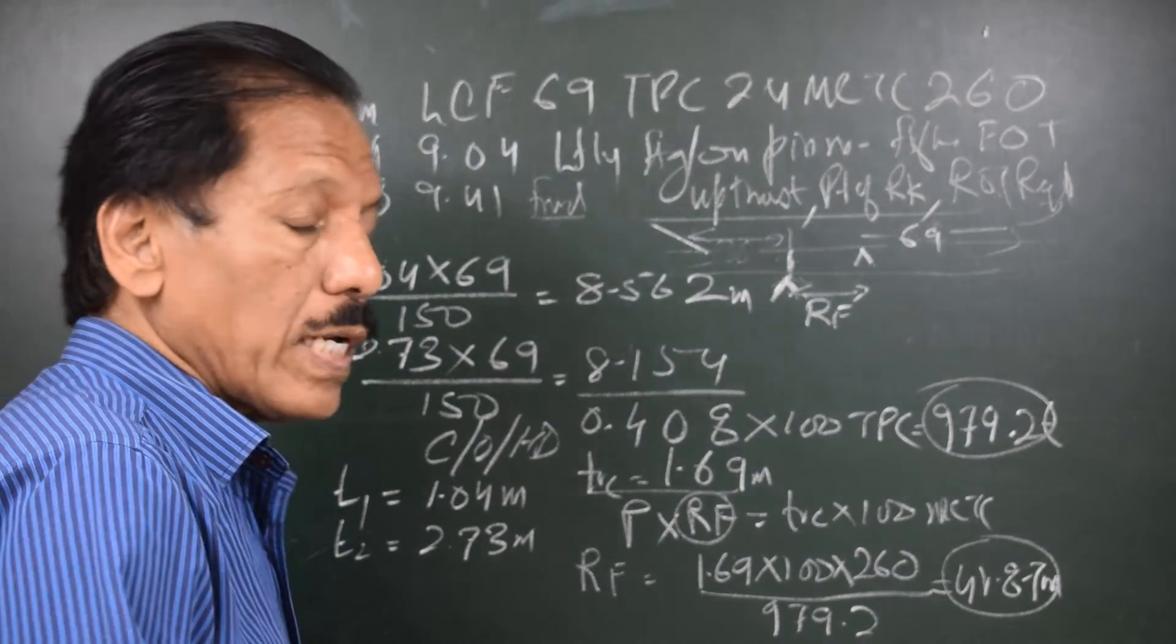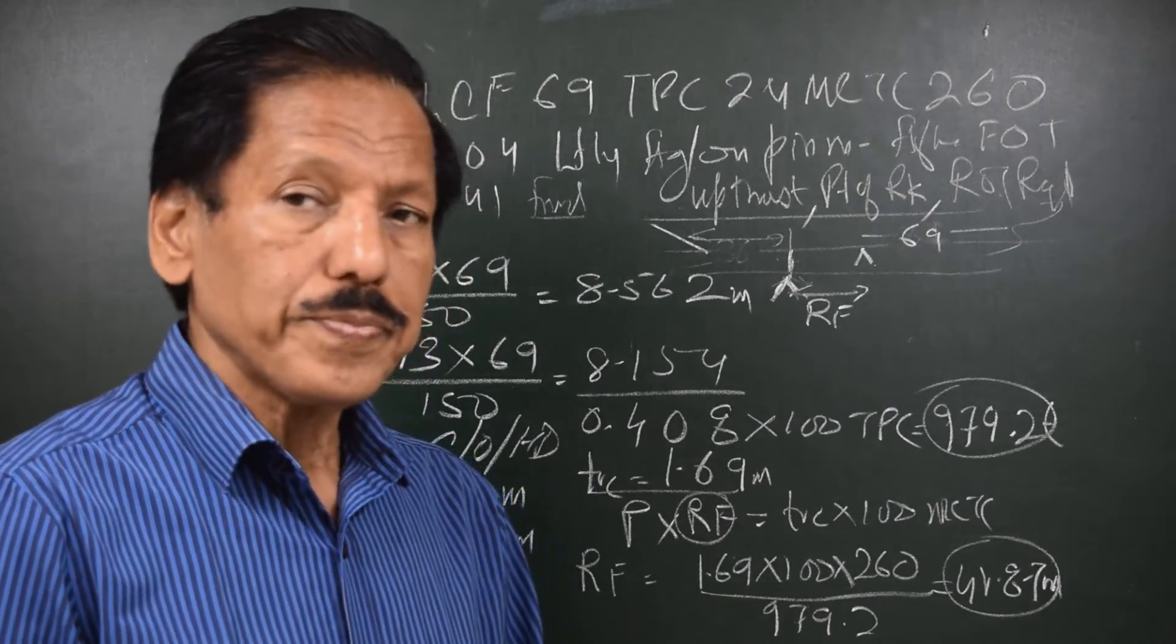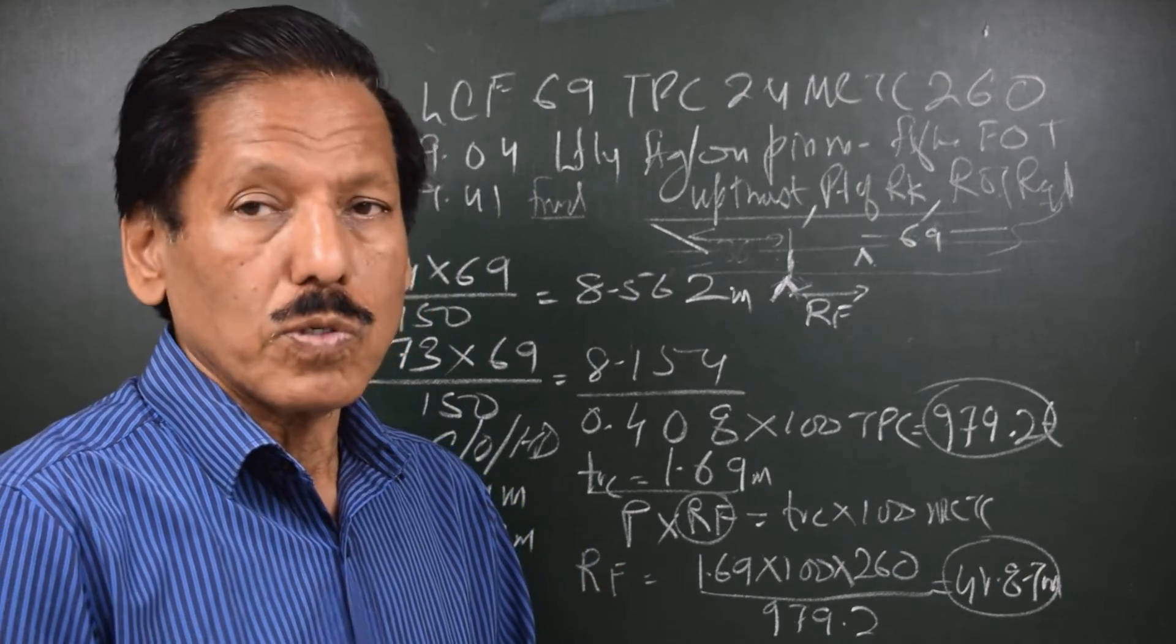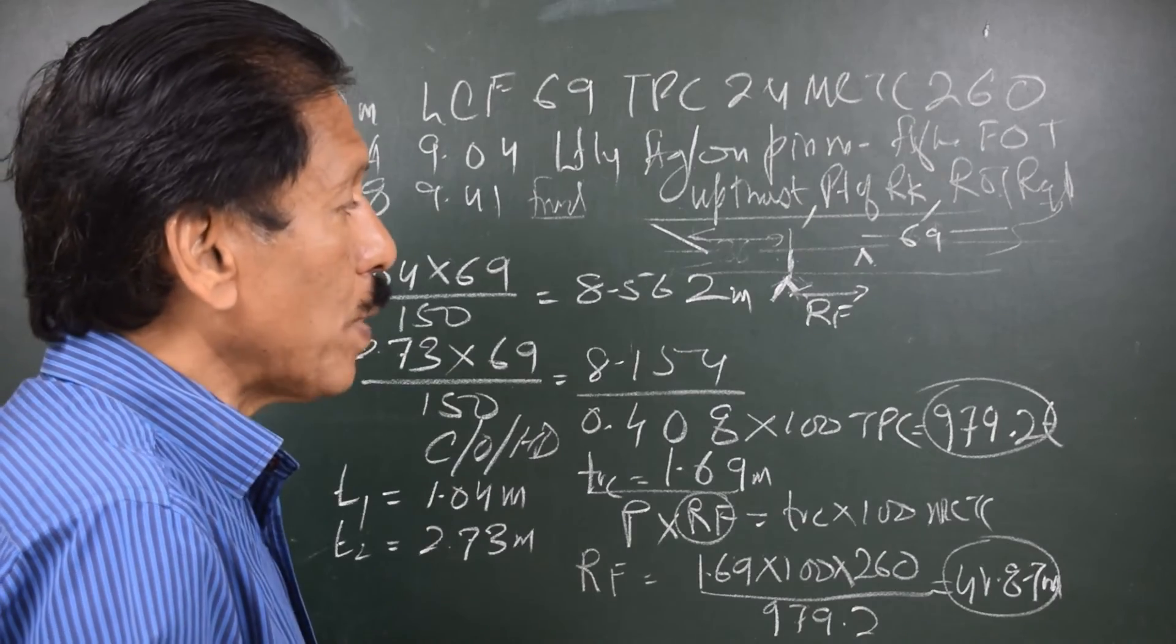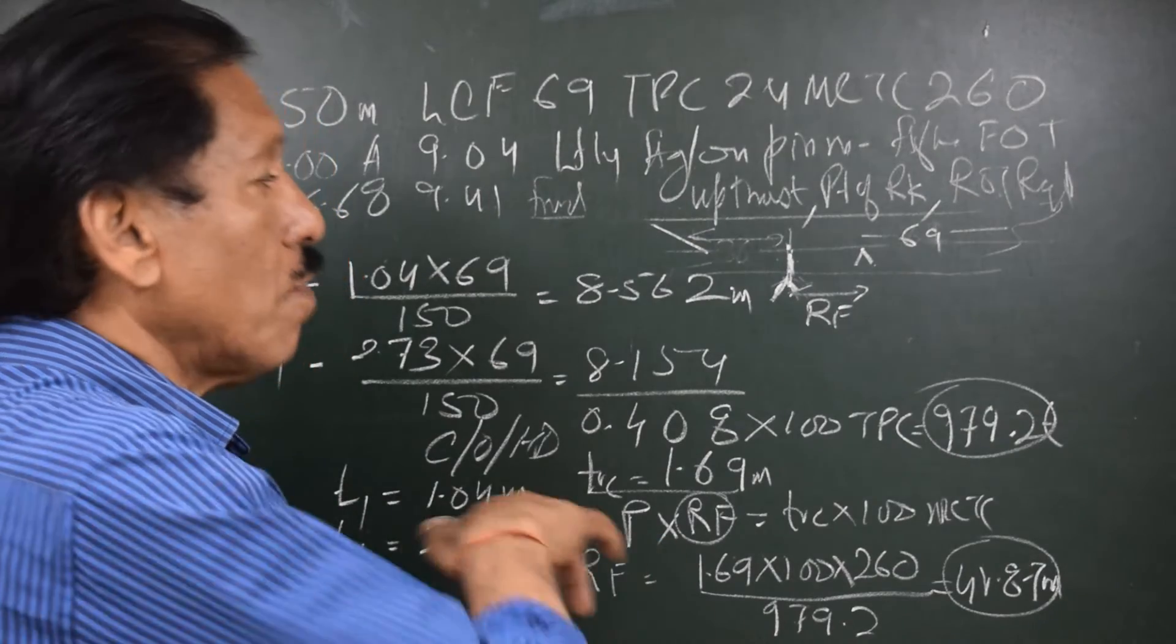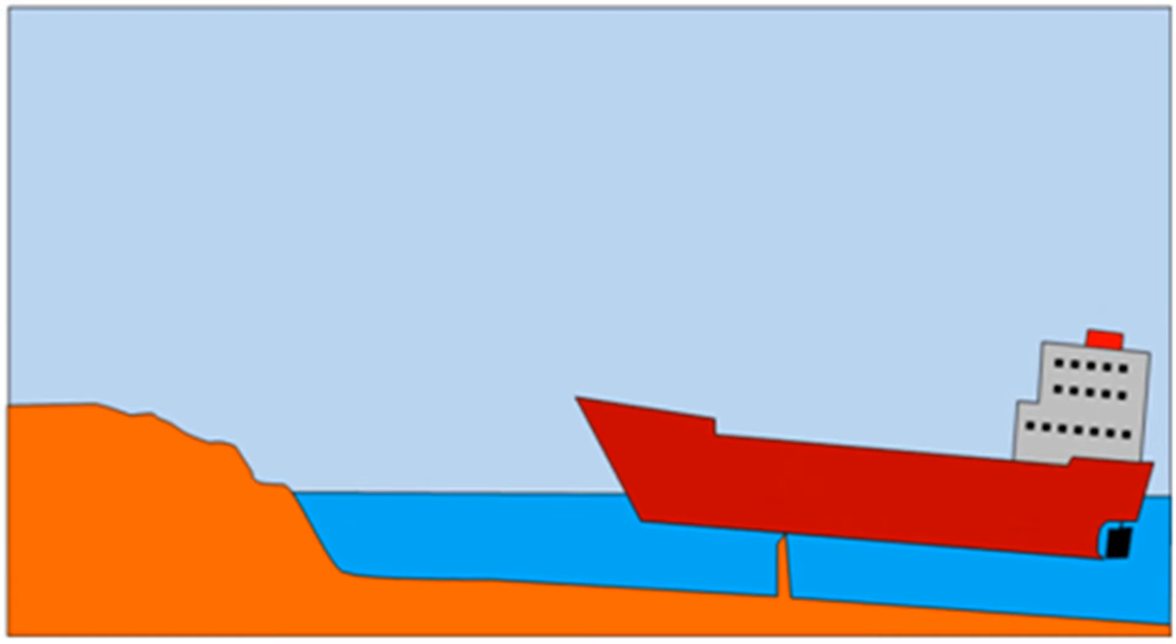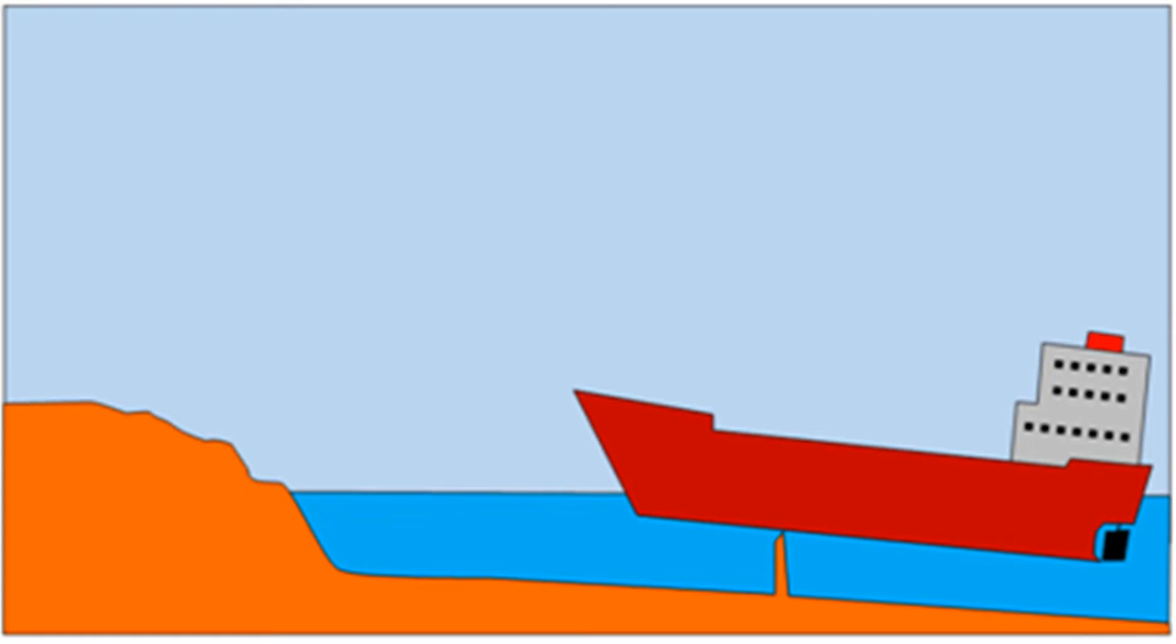Now we want to find out what is the rise of tide needed so the ship floats again. Well, rise of tide should be equal to fall of tide that caused this situation. If the same amount of tide rises, the ship will free float, which means we use the same principle: the change of draft at point of contact equals rise or fall of tide. Change of draft at point of contact is because of two reasons - one is bodily rise, the other is change of draft purely due to change of trim.